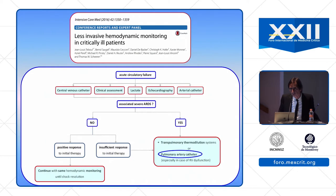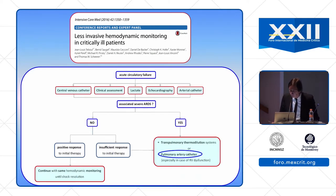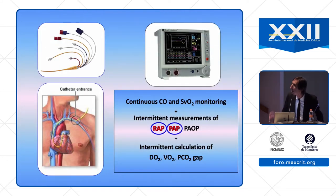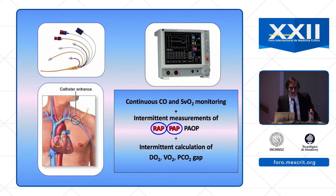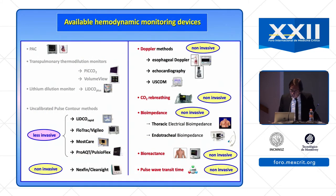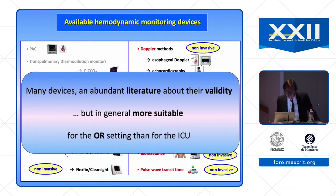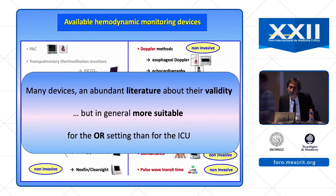The pulmonary artery catheter can also be recommended as an advanced monitoring technology, especially in case of RV dysfunction, because it can provide important variables like right atrial pressure, pulmonary artery pressure, and calculated pulmonary vascular resistance. Other techniques are not recommended in ICU shock patients; in general, these may be recommended in the operating room but not in the ICU setting.